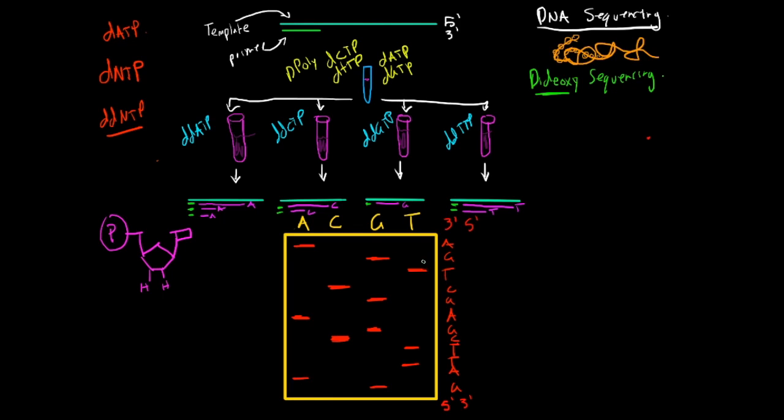And then you just make the sequence of the original template strand by doing the complete opposite of this. So this would be T, C, A, G, G, C, T, C, G, A, A, T, C. And that is your 5 prime to 3 prime.